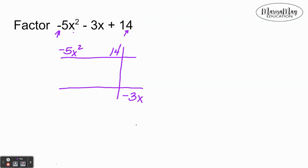We start in the first column and ask ourselves okay what two things are going to multiply to give me negative 5x to the second. Well that's going to have to be negative 5x and x, or it could be positive 5x and negative x. We're going to have to play around with that a little bit.